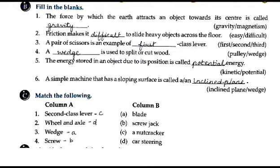Match the following: Second class lever - the answer is nutcracker. Axle - the answer is car steering. Wedge - the answer is blade or knife. So the match is: nutcracker is second class lever, car steering is wheel and axle, and knife/blade belongs to wedge.